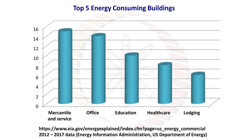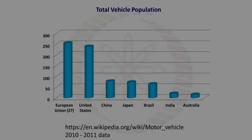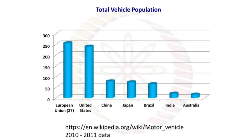For vehicles per thousand people: San Marino is at the top, Monaco is second, United States third, New Zealand fourth, Australia fifth, and China sixth. India has some considerable amount, but we can say India has very few vehicles per 1000 people. For total vehicle population, the European Union occupies first position, followed by the United States, then China, Japan, Brazil, and India.